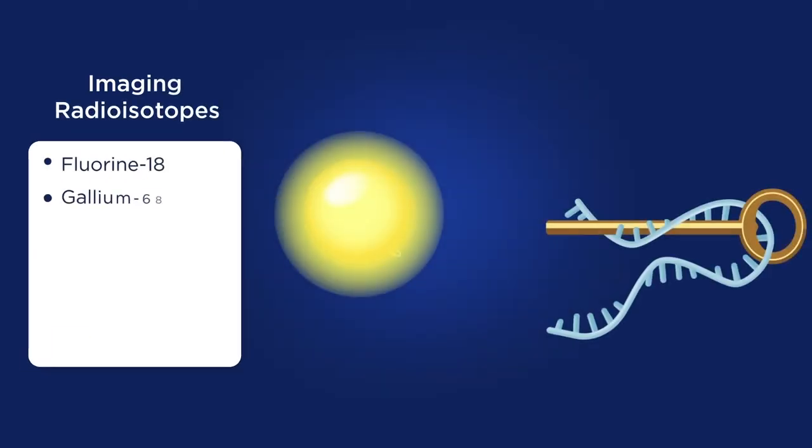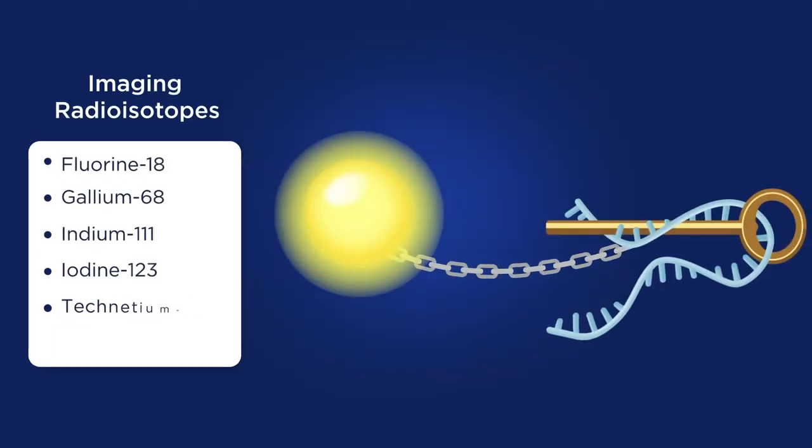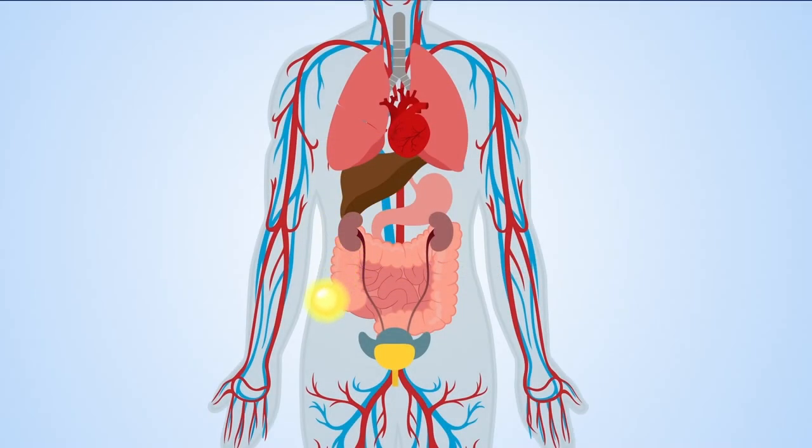A targeting radioisotope is bound to a pharmacologically active chemical, drug, peptide, or monoclonal antibody vector. The resultant compound is administered intravenously and distributed around the body.